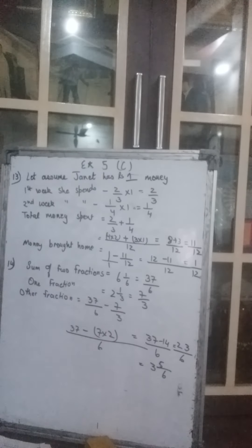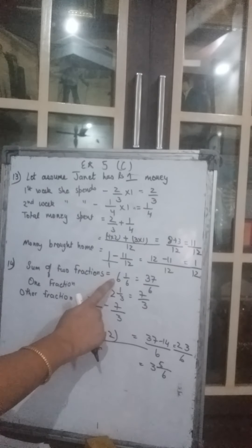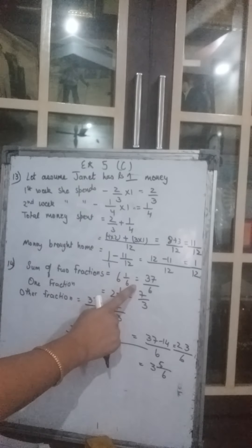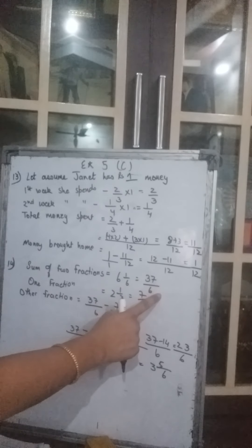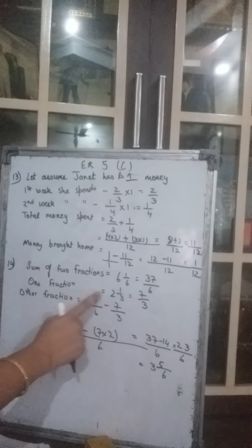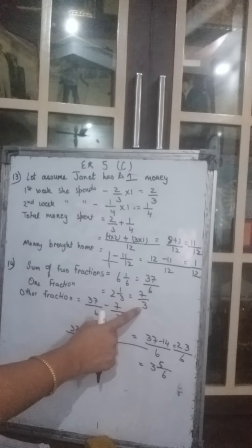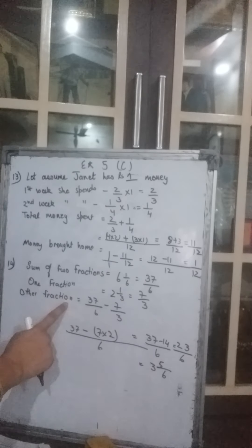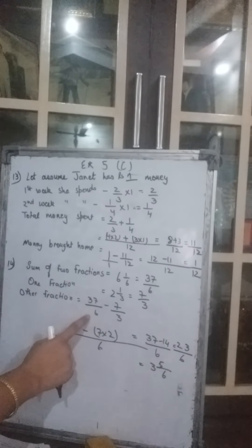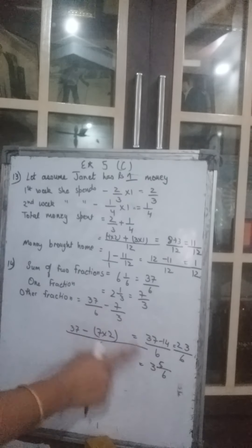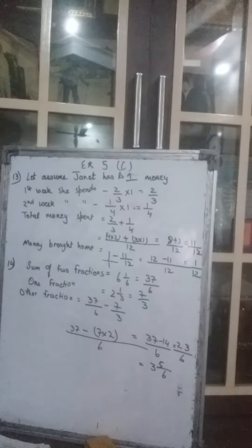Now the 14th question. The sum of two fractions is 6 whole 1 upon 6, which converts to 37 upon 6. One of the fractions is 2 whole 1 upon 3, which equals 7 upon 3. To find the other fraction, subtract from the sum: 37 upon 6 minus 7 upon 3. The answer is 3 whole 5 upon 6.